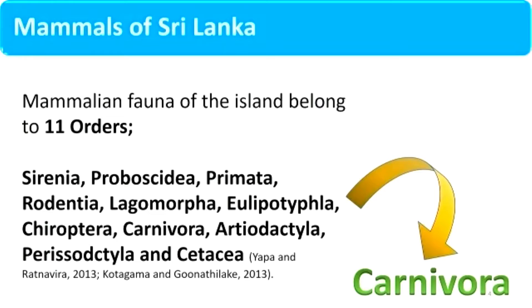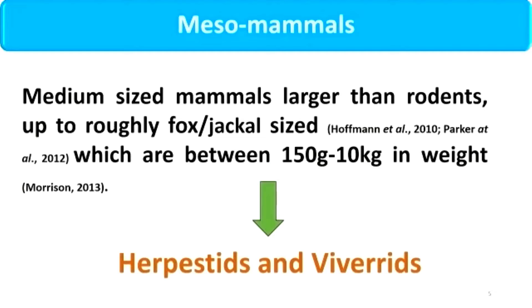Our focus was on mammals. In Sri Lanka there are 11 orders, of which our focal group was in the order Carnivora. Specifically, mesomammals, which can be defined as medium-sized mammals larger than rodents up to fox-jackal size. Earlier, Ashant talked about small cats, so I'm moving on to herpestids, viverrids, and viverrids — generally known as mongooses and civets — which are our focal group.